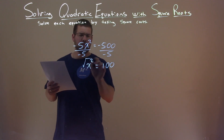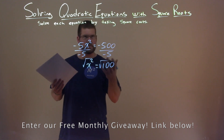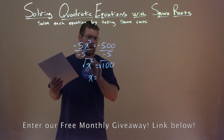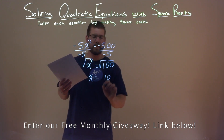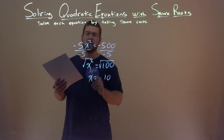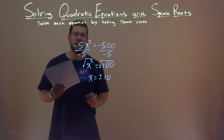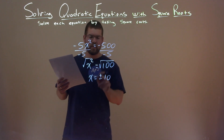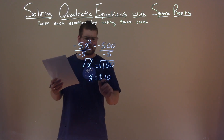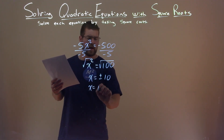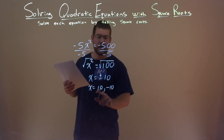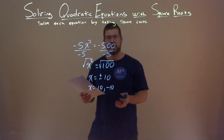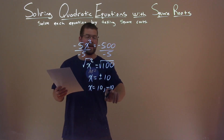I want to take the square root of both sides. Taking the square root of x squared eliminates it, leaving x by itself. The square root of 100 is 10. Since we're taking it over the equal sign, we can't forget the plus and minus. So x equals plus or minus 10, which is the same as saying x equals positive 10 and negative 10. Those are our final answer.